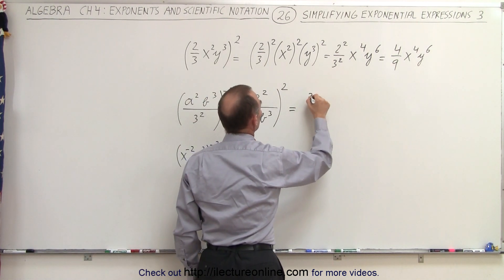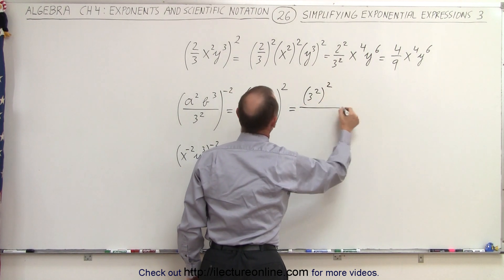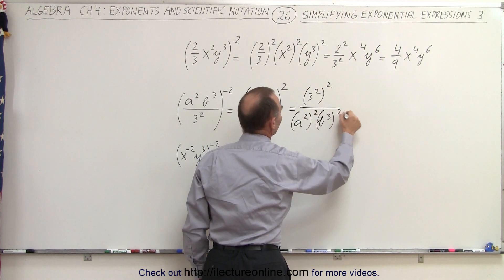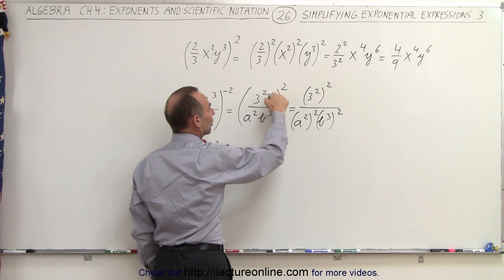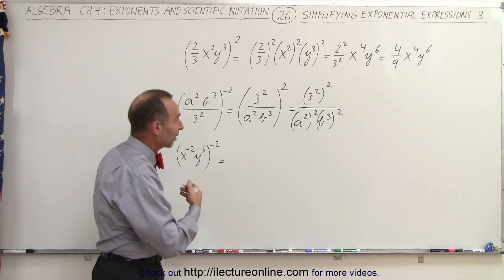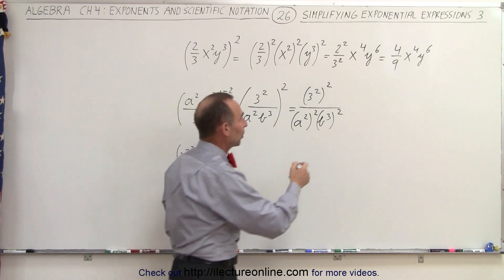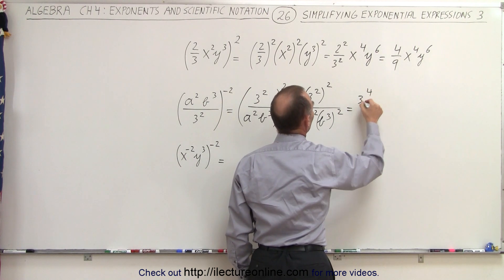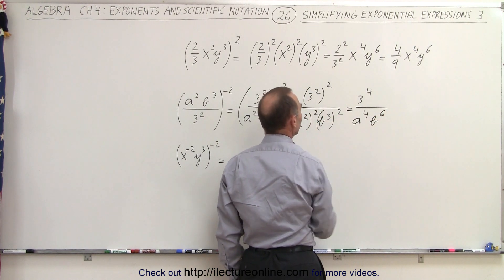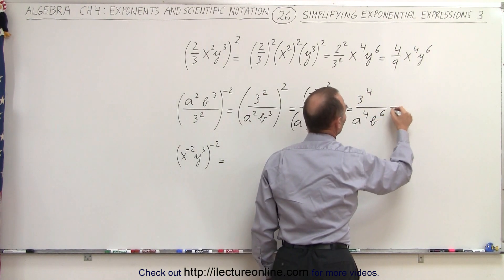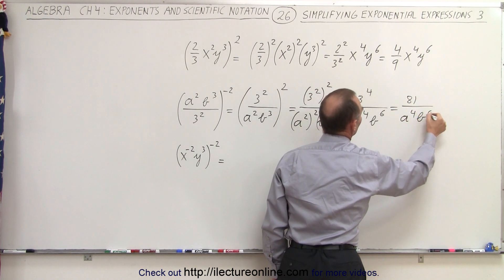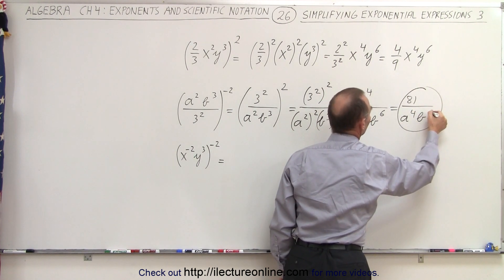This can now be written as 3 squared raised to the second power, divided by a squared raised to the second power, times b cubed raised to the second power. The exponent applies to everything inside the parentheses, and using the rule that an exponent raised to an exponent means we multiply — this equals 3 to the fourth divided by a to the fourth b to the sixth. And 3 to the fourth is 81, so the final answer is 81 divided by a to the fourth b to the sixth.